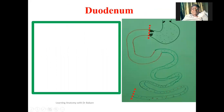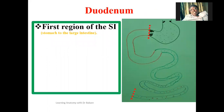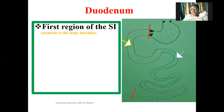The duodenum is the first region of the small intestine, and the small intestine is the region between the stomach and also the large intestine. This is the stomach up here. The first region of the small intestine is the duodenum, followed by the jejunum, then the ileum. The ileum is the terminal part of the small intestine, and it finally opens up into the large intestine — specifically into the cecum.